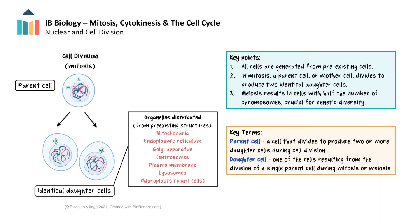The continuity of life depends on the ability of cells to reproduce. New cells arise from pre-existing cells through a fundamental process known as cell division. This process is essential for growth, repair, and maintenance of tissues in multicellular organisms. For cells involved in growth and repair, mitosis is the form of cell division that ensures each new cell receives an identical set of chromosomes. Mitosis is followed by cytokinesis, which physically divides the cell into two daughter cells, each with a complete and identical set of genetic information.